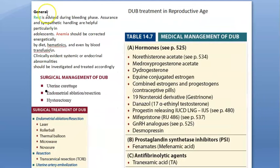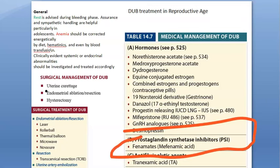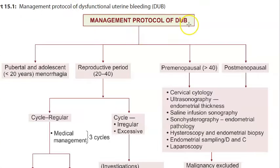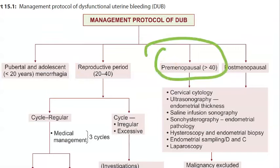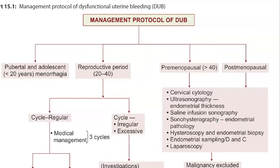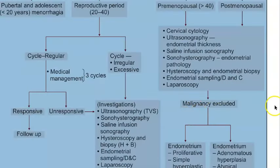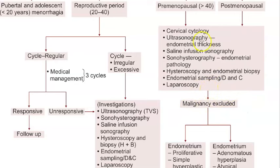Treatment is similar to general DUB management. Rest and correct anemia because they are bleeding a lot. For medical management you can give hormones. Prostaglandin inhibitors like mefenamic acid are not needed here because these patients already have less prostaglandins and no pain. For premenopausal DUB, investigations include cervical cytology, ultrasonography, saline infusion sonohysterography, hysteroscopy, endometrial sampling, and laparoscopy. Most importantly, you must exclude malignancy in any abnormal uterine bleeding, especially premenopausal or postmenopausal.